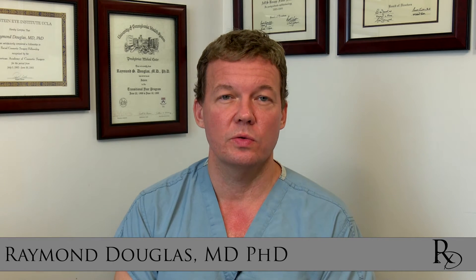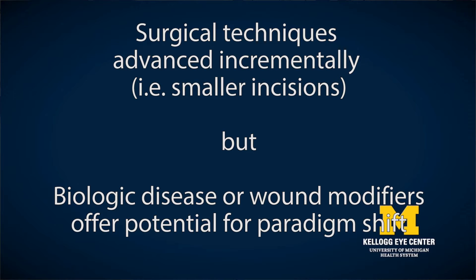Many people ask about how to overcome scarring. In this several-part series, we'd like to talk about wound modulation or biologic scar modification. In doing so, we're going to talk about eyelid retraction — white under the eyes or the eyelids pulled down — and also scars in the face, such as after a cancer surgery. Our surgical techniques have advanced incrementally with smaller incisions, but the biology of wound modifiers offers the potential for a paradigm shift in how we treat these diseases.